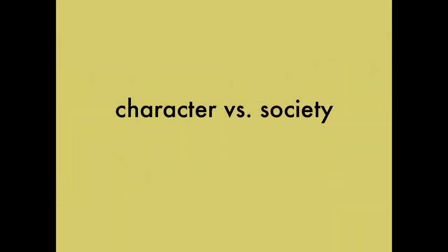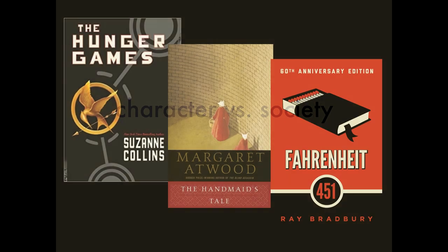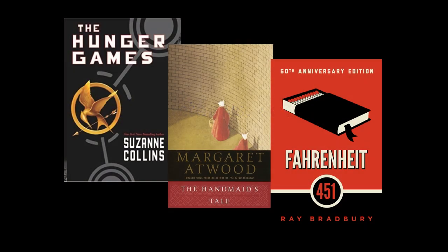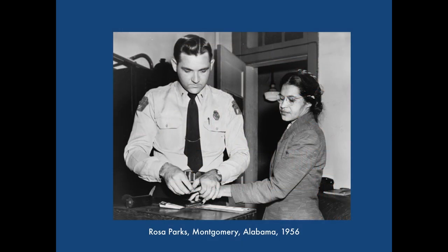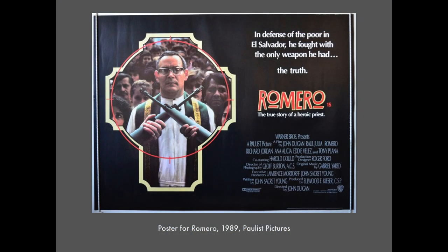For Character vs. Society, think of dystopias like The Hunger Games, The Handmaid's Tale, or Fahrenheit 451. This is where a character is in conflict with his or her society. Maybe it's an unjust system, like an example of prejudice or political oppression. Your character is going to be a nonconformist in some way, trying to beat the system. Sometimes these have happy endings, and sometimes they don't.